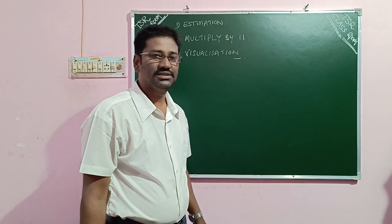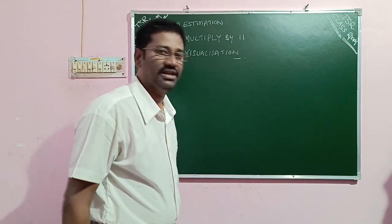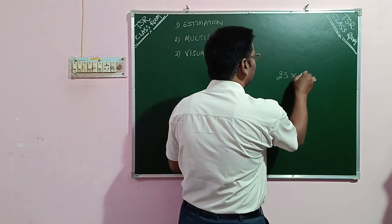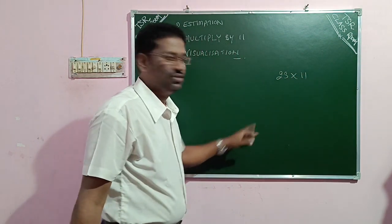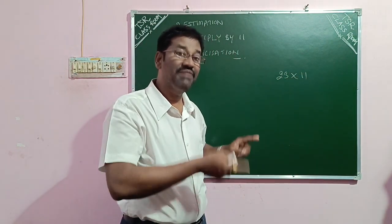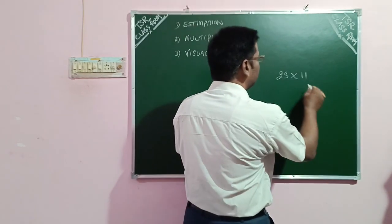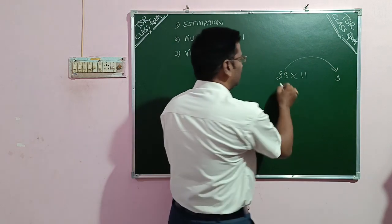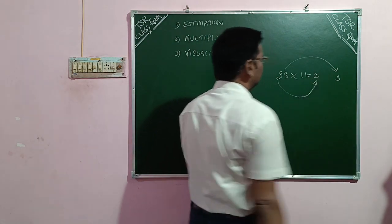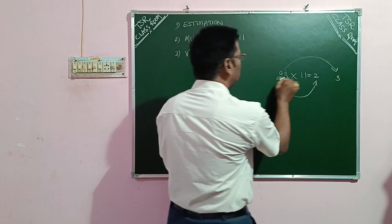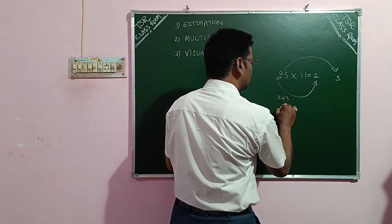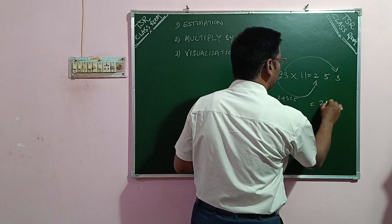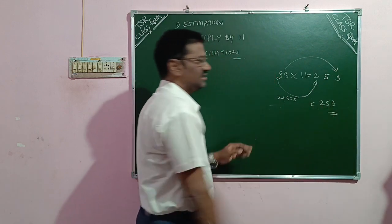Second tip: multiply by 11. How do you multiply by 11? Observe 23 into 11. It is simple: you put the 3 here in the units place, you put 2 in the hundreds place, and in the middle you put 2 plus 3 which is 5. The result is 253. That's it.